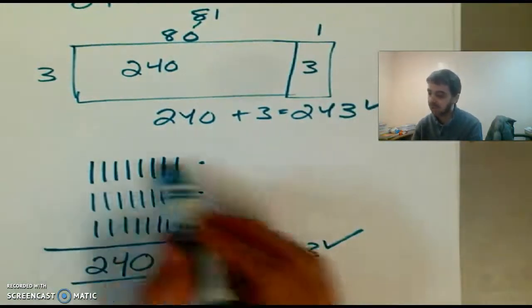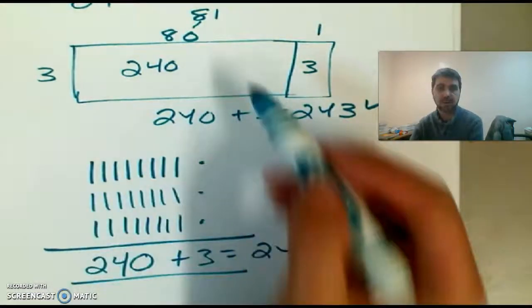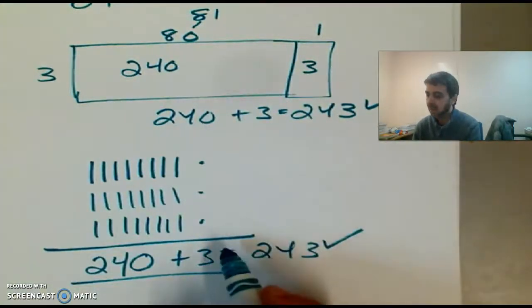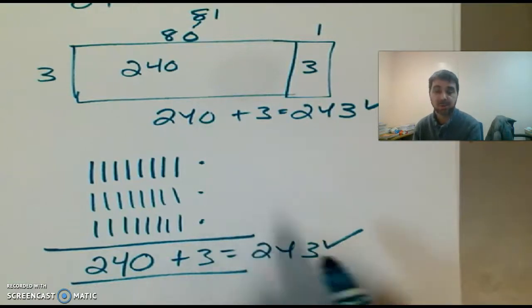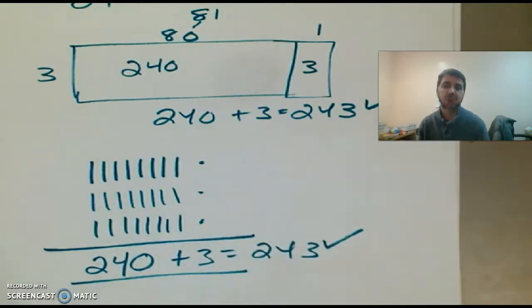So you can use this method to check your answer with the area model. It's just another way of doing it. And then if you want to check it against the computer to triple check, that's fine. But you don't have to.